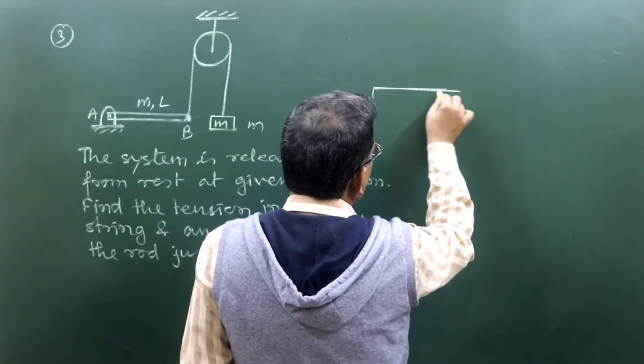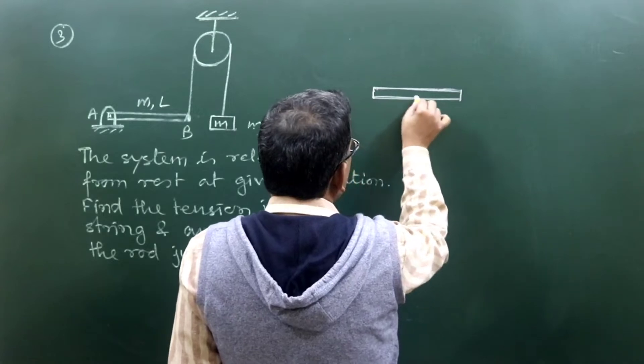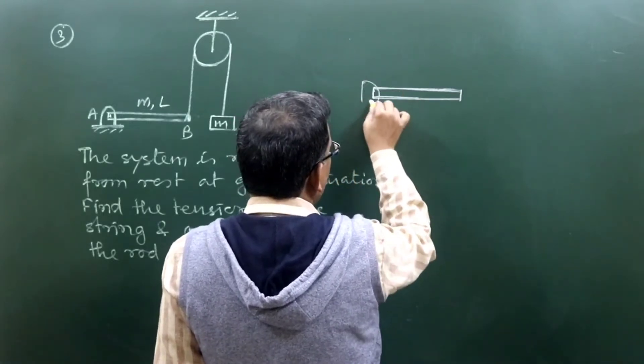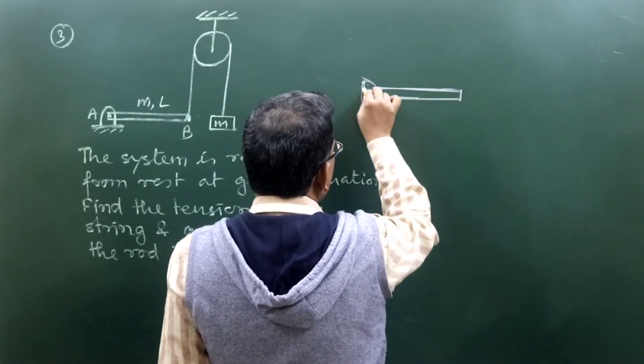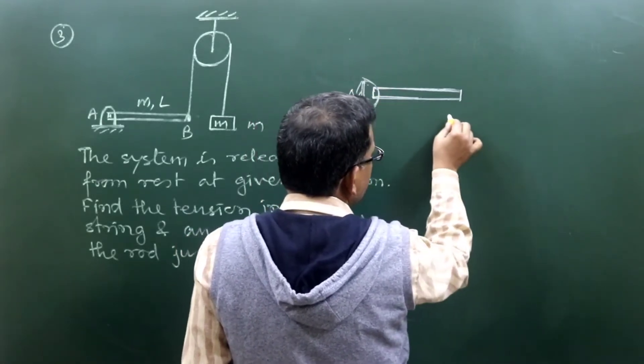According to FBD, if we proceed with the FBD, this will be the one end about which the rotation is possible. This is end A, this is B.